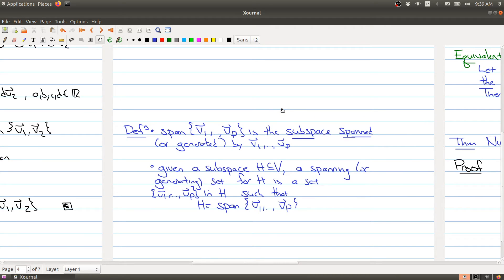And we want to add some terminology here before we move on. The spanning set of V1 through Vp is said to be the subspace spanned or generated by V1 through Vp. This definition makes sense because once you have V1 through Vp, you're generating all the other elements inside of your set.